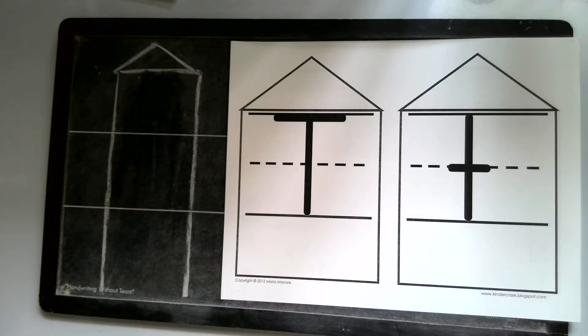Today we're going to draw our lowercase letter t. Our letter t, just like our uppercase T, lives in the top and bottom of our handwriting house. Our letter t makes the t-t-t sound like in tiger and taco.